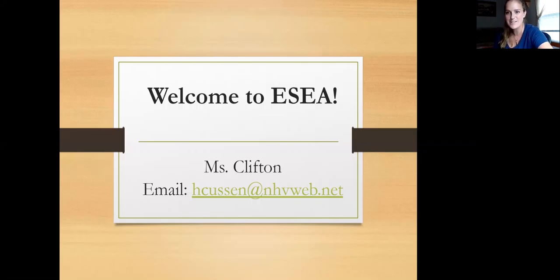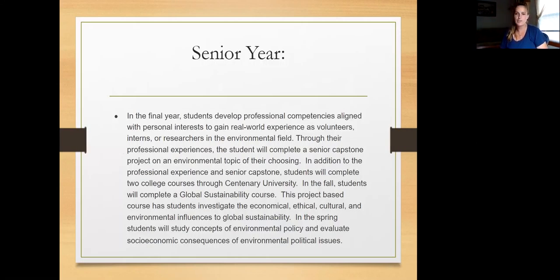So let's get going into this year's curriculum. Senior year is going to be a few different courses. Your child had the opportunity to register for two centenary courses. The first is Global Sustainability held this fall, and it'll end after the end of the second marking period in January. The second centenary course is Environmental Policy, and that will be in the spring.